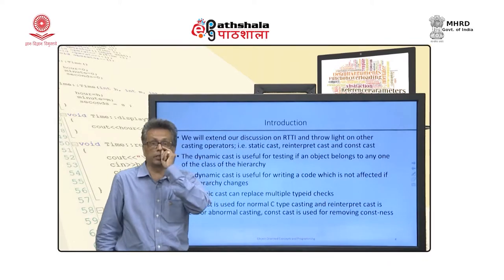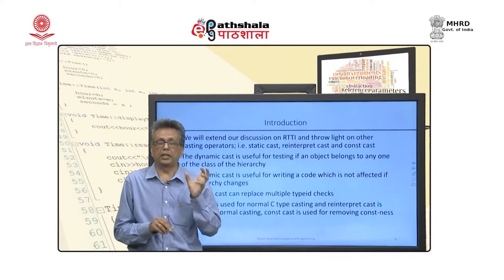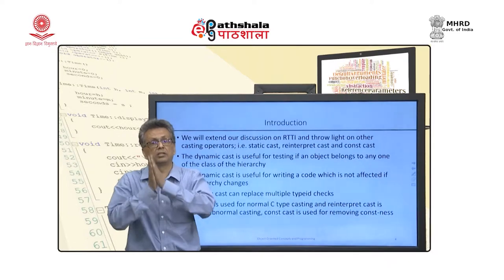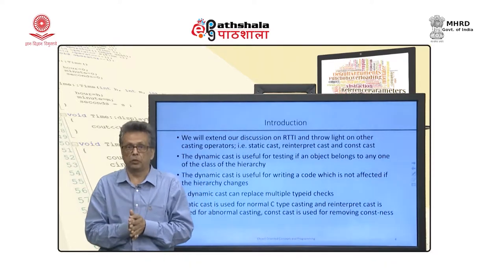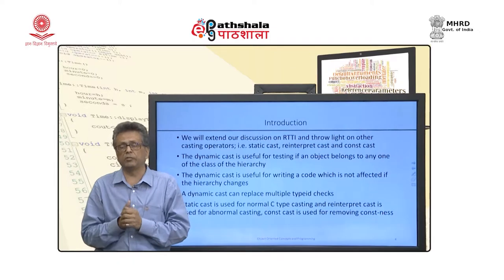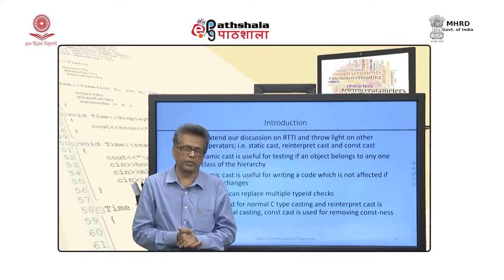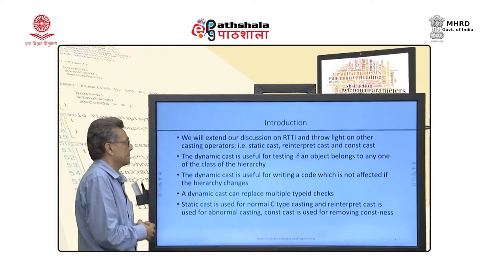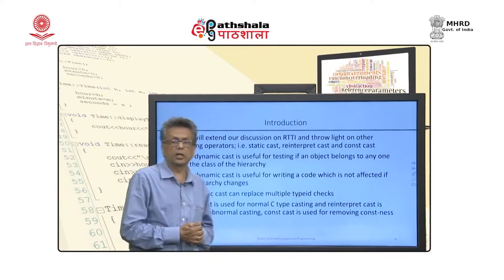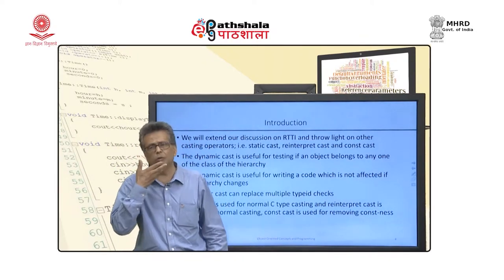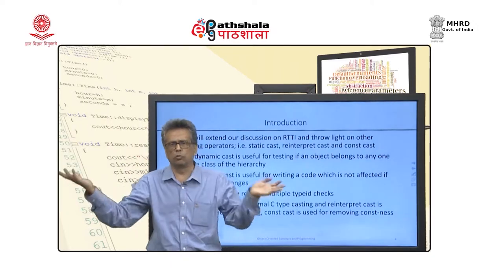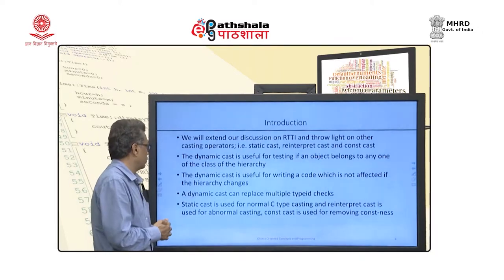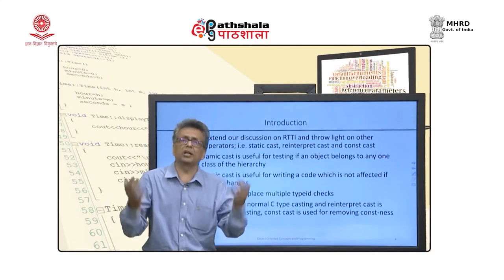Dynamic cast is very important. It actually casts one type of pointer into another only if it is relevant and not otherwise. That is the reason why it is very critical. Dynamic cast operates only on polymorphic object pointers or references. The great thing about dynamic cast is it is most flexible — you do not need to worry about the hierarchy. If the hierarchy changes, the code will not change. It can actually replace multiple type ID comparisons.